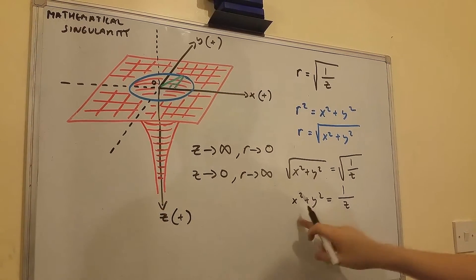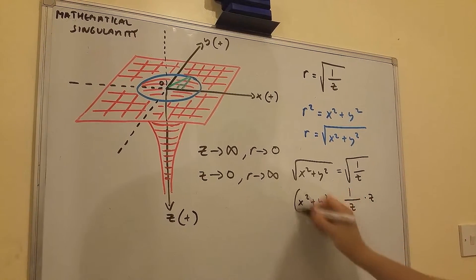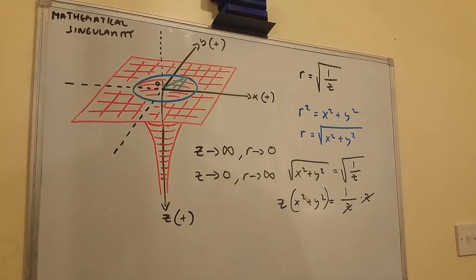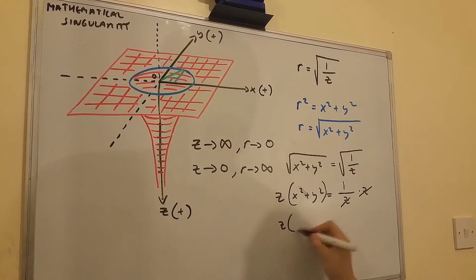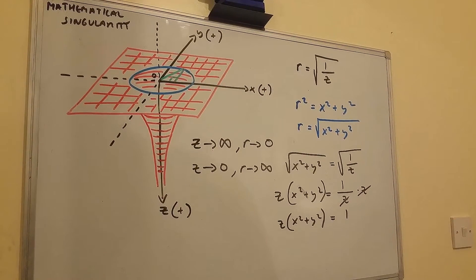Now I'm going to multiply both sides of this equation by z. So I get z multiplied by x squared plus y squared is equal to 1.